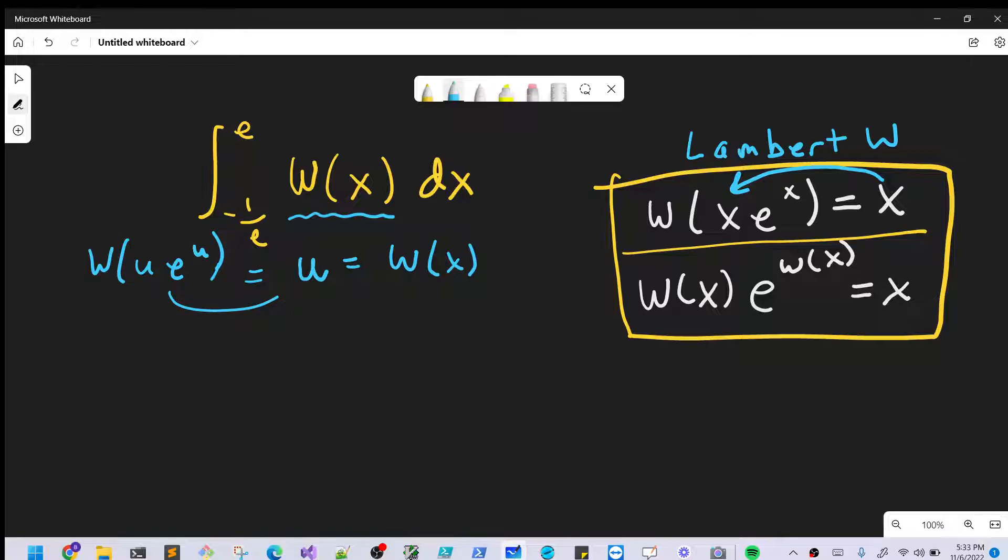But then if W(u) e to the u is equal to, if this is equal to this, then we can equate what's inside, and we're going to have this thing that we can deal with more nicely, u e to the u equals x. So that's going to be helpful for us right there. So let's box that for a second.